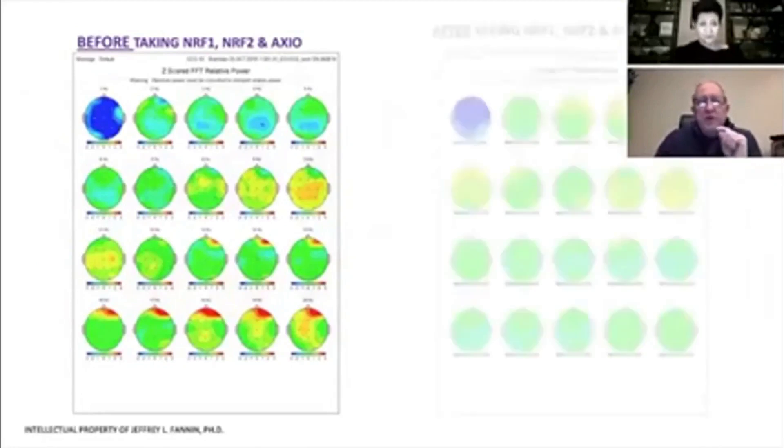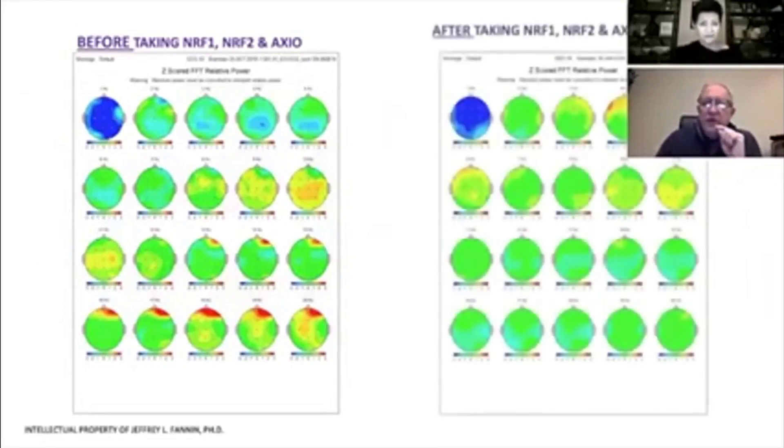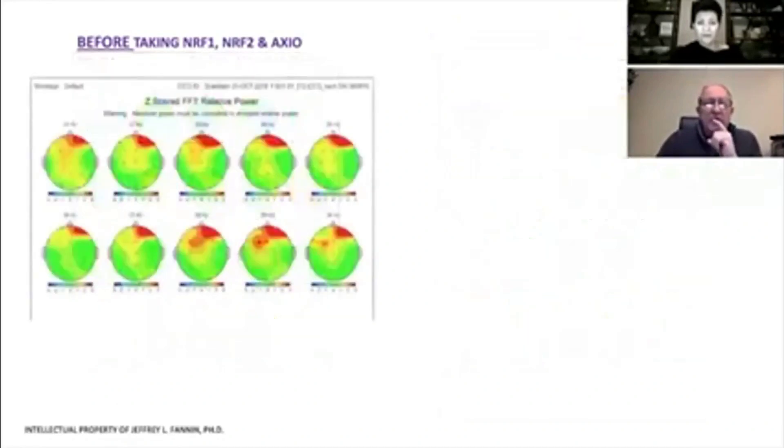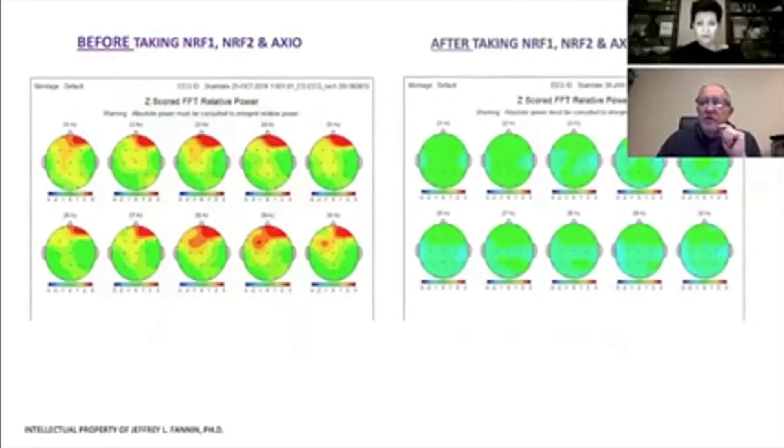Let's look at his brain map side by side. This is the before, this is the after. Again, you don't have to be a neuroscientist to figure this out. You can see that there is a dramatic change that happened there. This is his beta activity, his thinking activity, in the normal range. All of those things are really incredible, and all I can say is I'm astounded by this.